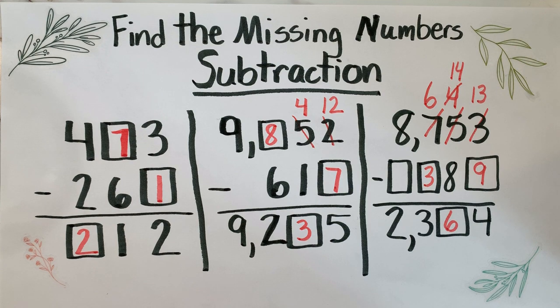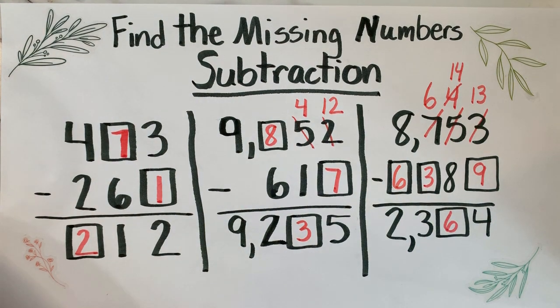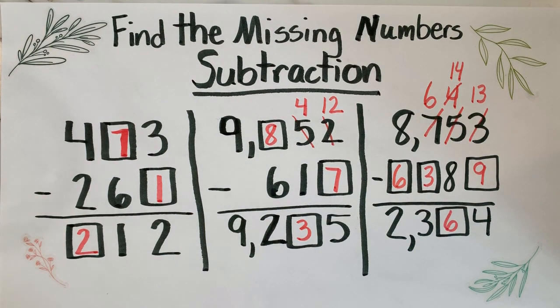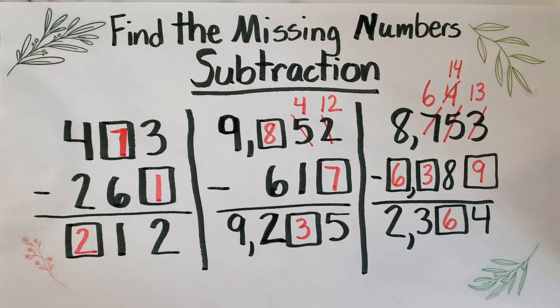Last one: eight minus what will give me two? If you said six, that is absolutely correct. And I need to go back and add something that I left off. Do you know what I'm missing right here? If you said a comma, you are absolutely correct. So make sure you include those commas.